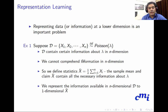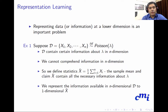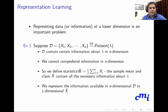We cannot comprehend information in n dimensions. So we define a statistic x-bar, which is (1/n) * summation of xi — the simple sample mean. We claim that x-bar contains all necessary information about lambda, as taught in probability and statistics. We represent the information available in the n-dimensional dataset D into the one-dimensional x-bar.